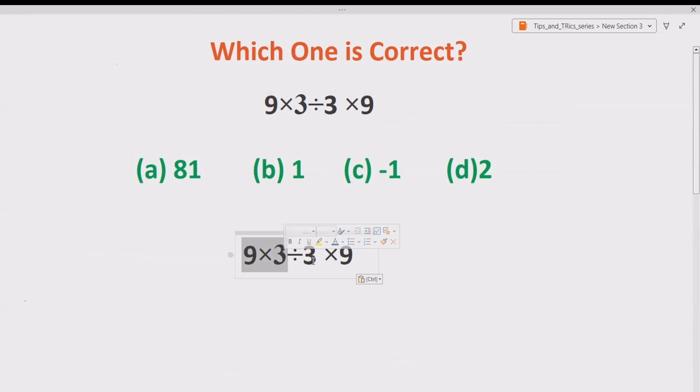So it means 9 multiplied by 3 gives us 27. So this becomes now 27.